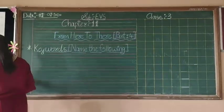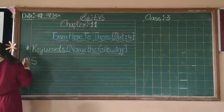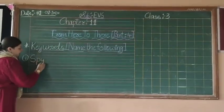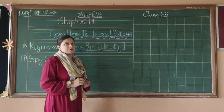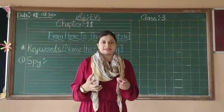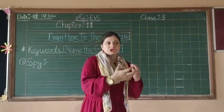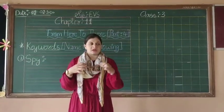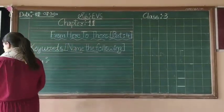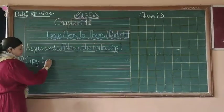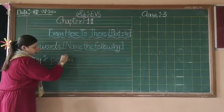Our first keyword is number one: S-P-Y, 'spy.' What do you mean by spy? Spy means a secret worker, like a detective — someone who finds out things. The answer for spy is: Person, P-E-R-S-O-N.